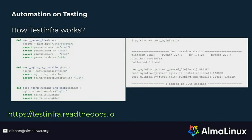On the left side is a simple test using three modules: the file module — it checks a password file — the package module to make sure Nginx is installed and checks its version, and the service module to make sure it is running and enabled. On the right screenshot, we can see the output when we run it.